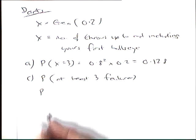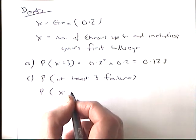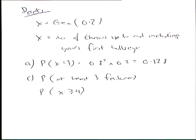It's not including 3, so it's going to be X is greater than or equal to 4. At least three failures means you need at least four goes to get your first attempt, and we're counting when the first attempt can be. So it's X is greater than or equal to 4.